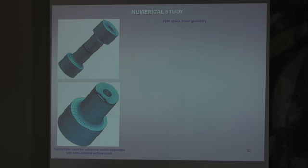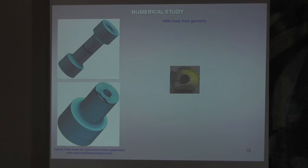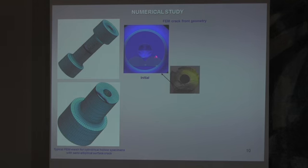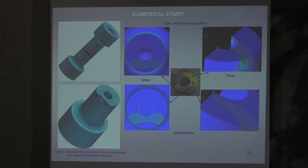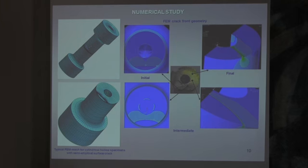Now I move to our numerical study. For each specimen, for each crack front position and each temperature, we calculate distribution of all parameters along the crack front. This is a typical finite element mesh. We calculate distribution of some parameters for initial, several intermediate, and final through-wall-thickness crack front positions — for each specimen, for each type of loading condition, for each temperature.